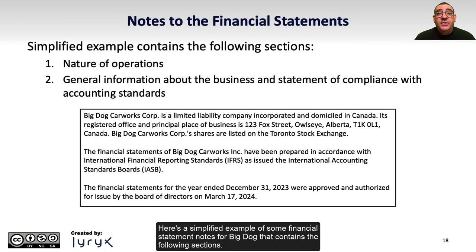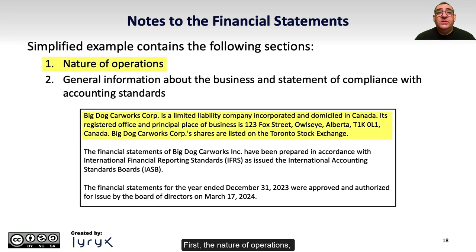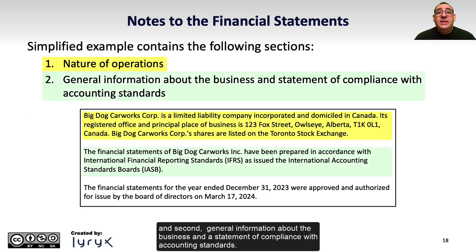Here's a simplified example of some Financial Statement Notes for Big Dog that contains the following sections. First, the nature of operations, and second, general information about the business and the statement of compliance with accounting standards.